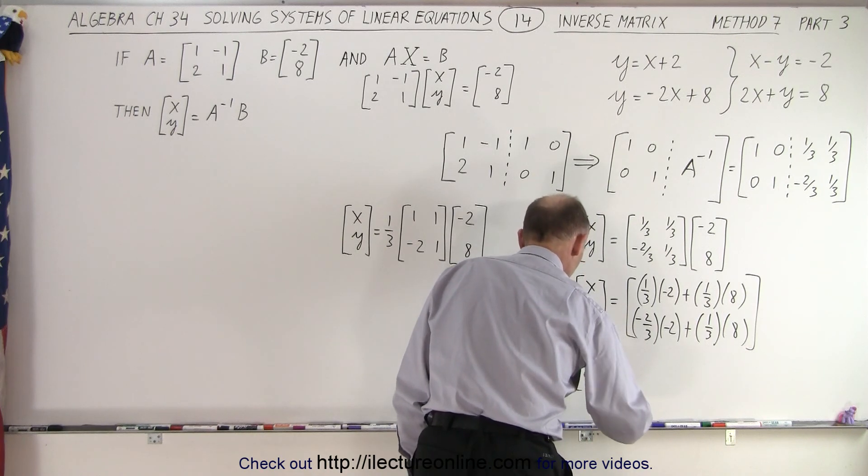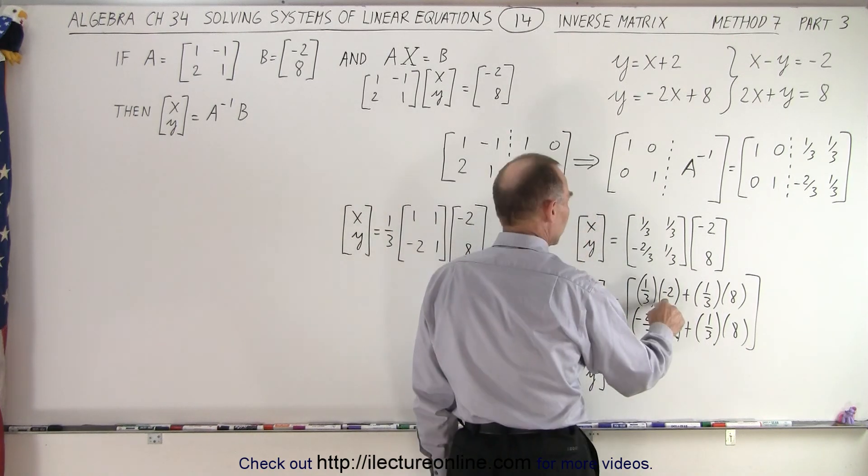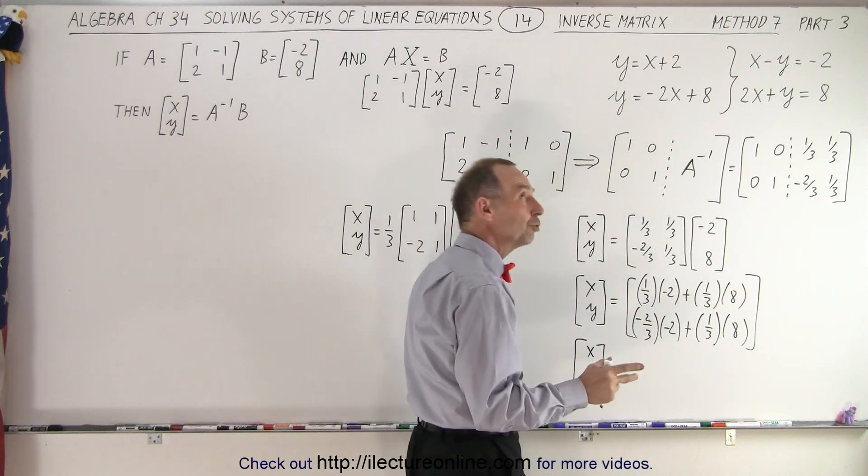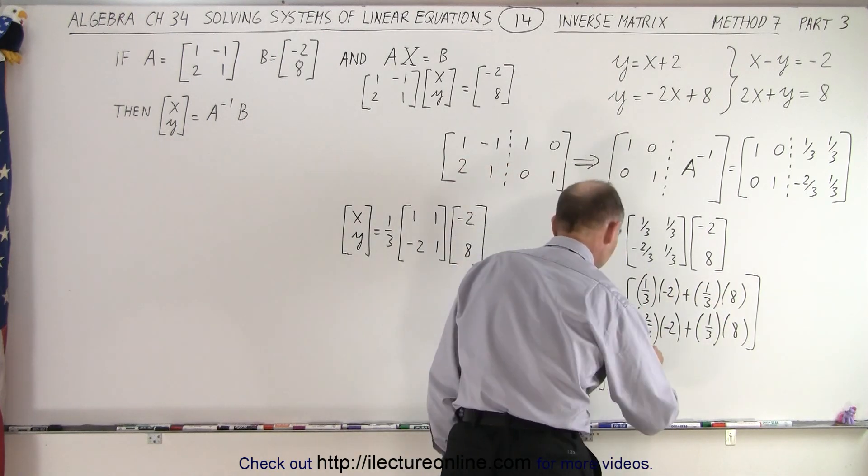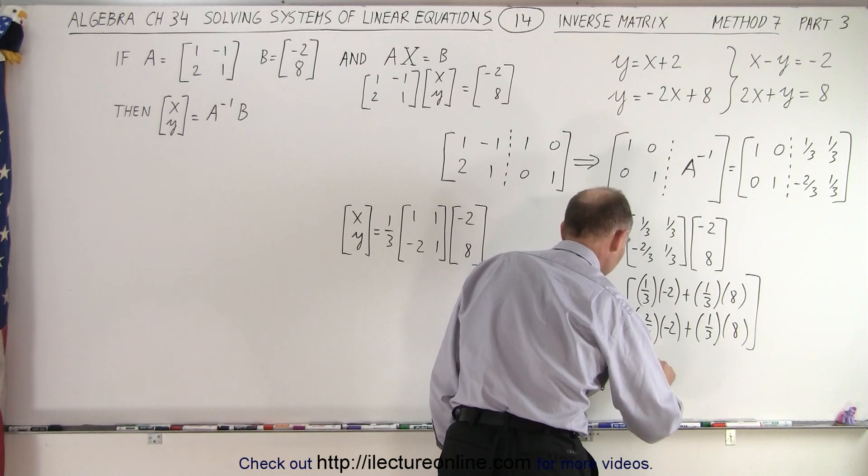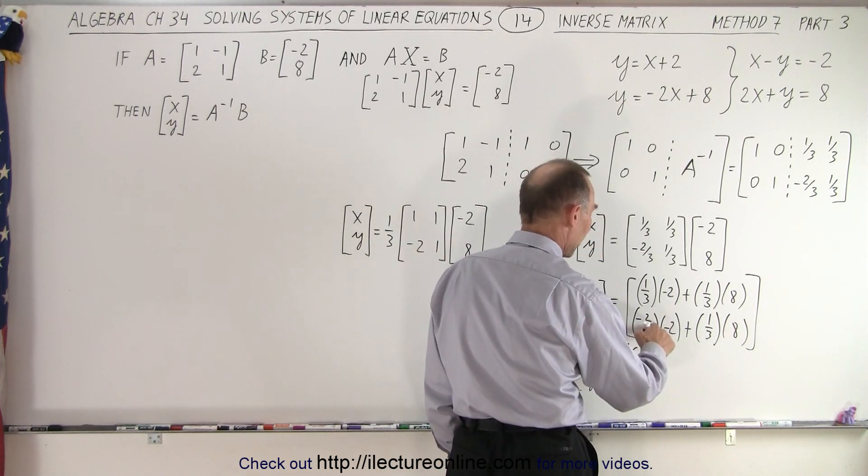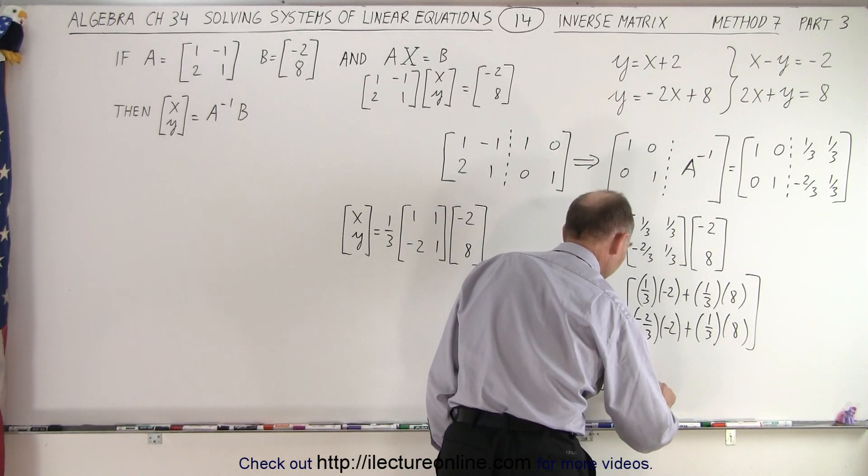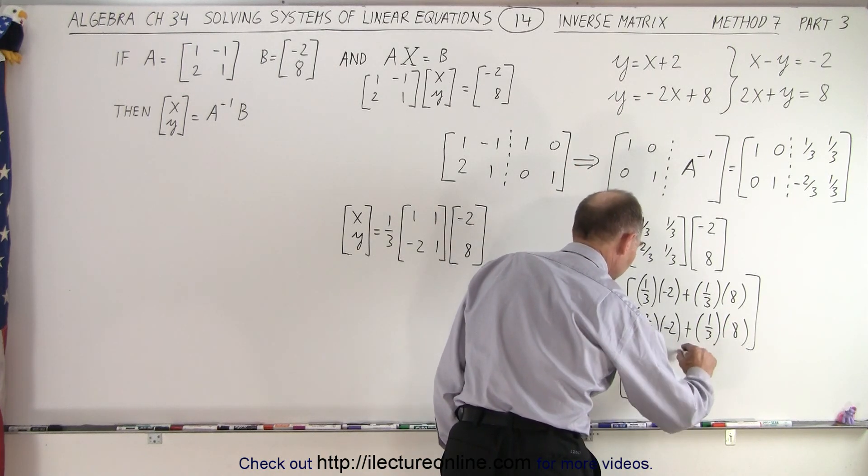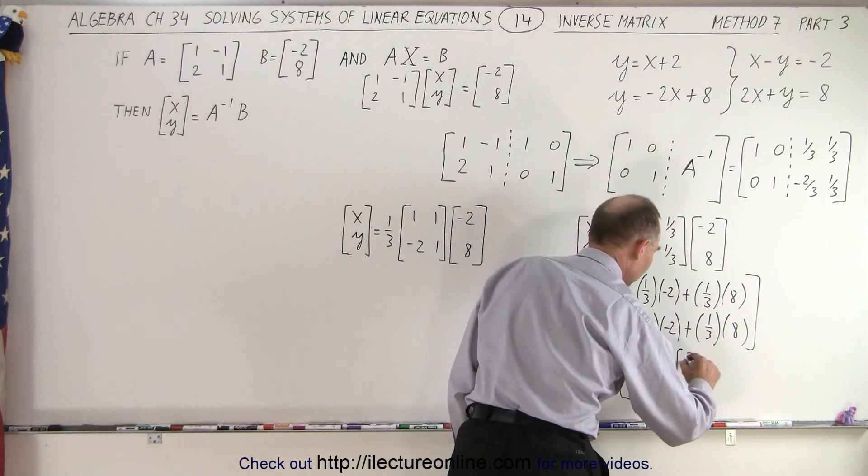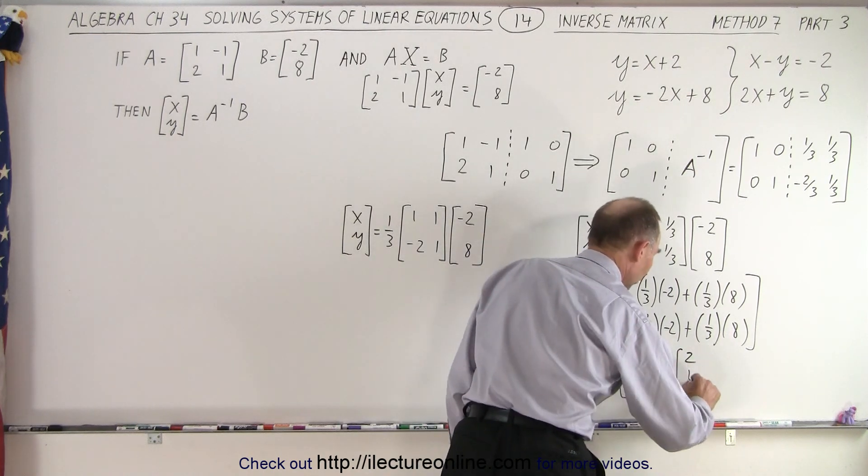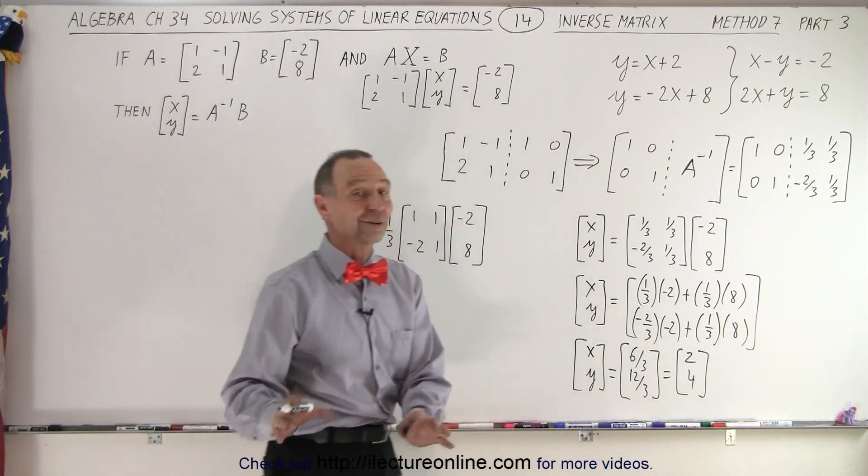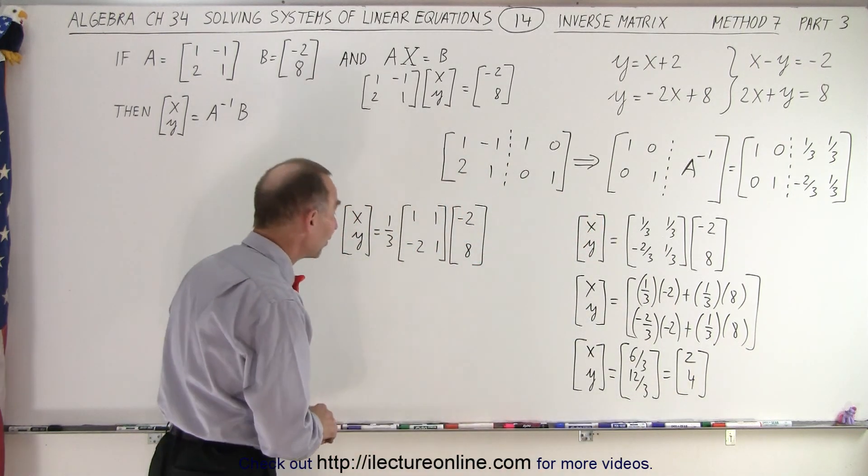So let's see what these are equal to. So this is negative two thirds plus eight thirds. Negative two plus eight, that's six thirds. So in the numerator, we end up with six thirds. In the denominator, we get, that is a positive four thirds plus eight thirds. That would be 12 thirds. And of course, when you do the division, six divided by three is two. Twelve divided by three is four. That tells us that the values for x and y are two and four, which is exactly what we found on the previous videos.